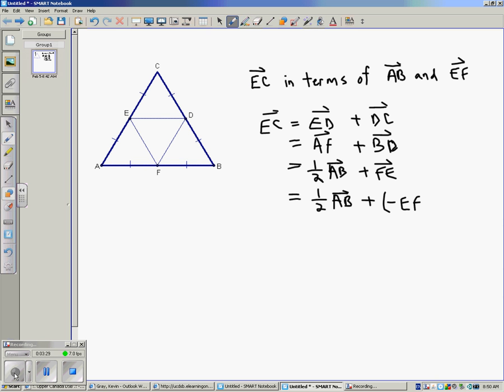I think you've maybe picked up the fact that putting a negative sign in front of a vector just basically changes the direction. So we've changed the vector point system here. So basically, we've got one-half AB plus, in brackets, negative EF. Simplifying gives us the required solution.